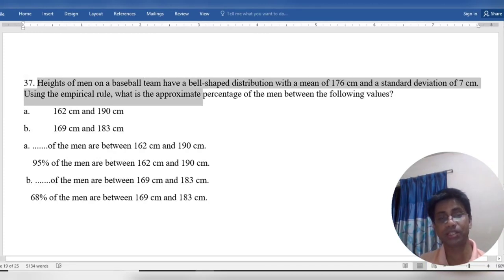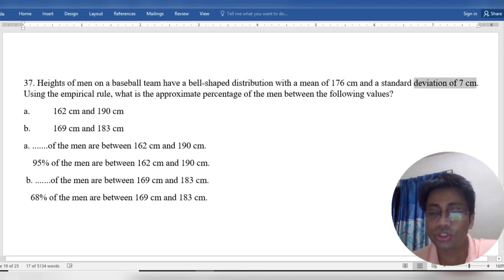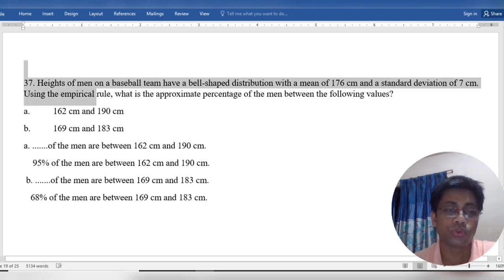Heights of men on a baseball team have a bell-shaped distribution with mean 176 cm and standard deviation of 7 cm. Using the empirical rule, what is the approximate percentage of men between the following values?